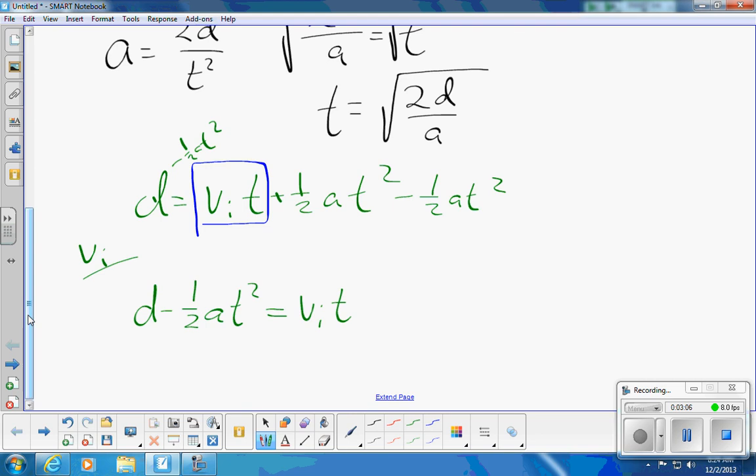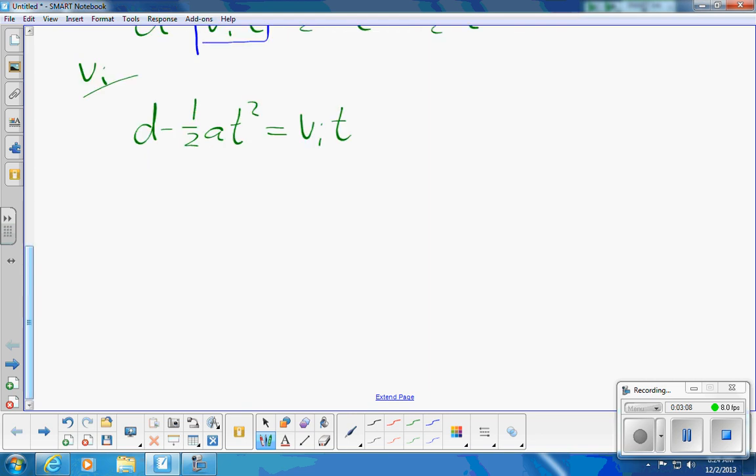Now we proceed by normal means, as we say. I want vi all by itself, so I'm going to divide each side, all of each side, by t. They cancel, and I get vi is equal to d minus one half a t squared, all divided by t.